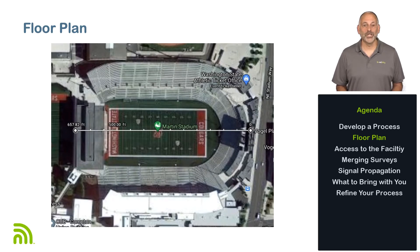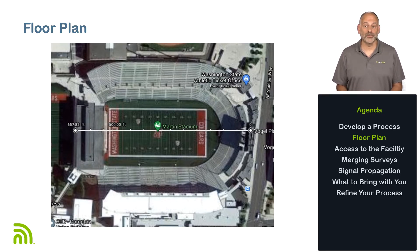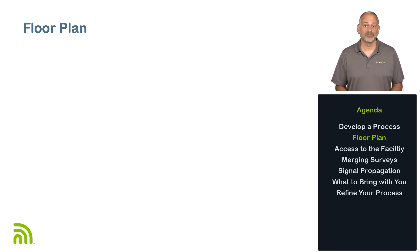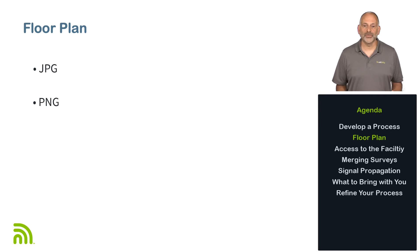This image can then be imported into AirMapper for the site survey. The key is that we have something that can be used to map the wireless network measurements performed to a physical location on the site. The AirMapper application accepts both JPEG and PNG file formats, so regardless of where you get the floor plan, it's going to need to be in one of these formats to import it into the application.